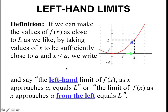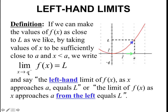We have two different types of limits. The first one is what we call left-hand limits. The definition of a left-hand limit is: if we can make the values of f of x as close to L as we like by taking values of x to be sufficiently close to A, and x is less than A — meaning we are getting closer and closer to A from the left, where these x values are smaller than A. We write: the limit as x approaches A from the left of f of x equals L. This little minus symbol represents from the left-hand side.